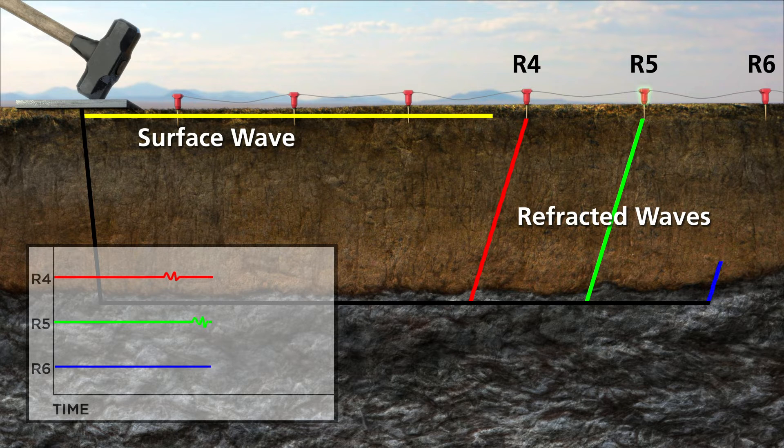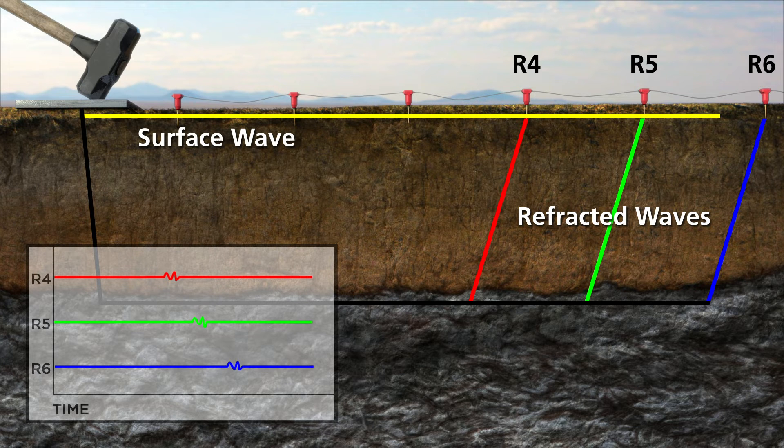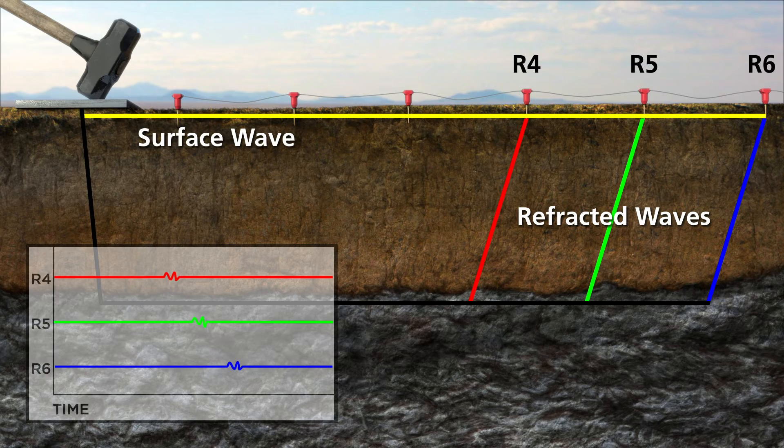Seismic refraction, a surface method, allows for mapping of subsurface changes such as depth to bedrock and relative soil density based on the arrival times of refracted waves relative to direct surface waves.